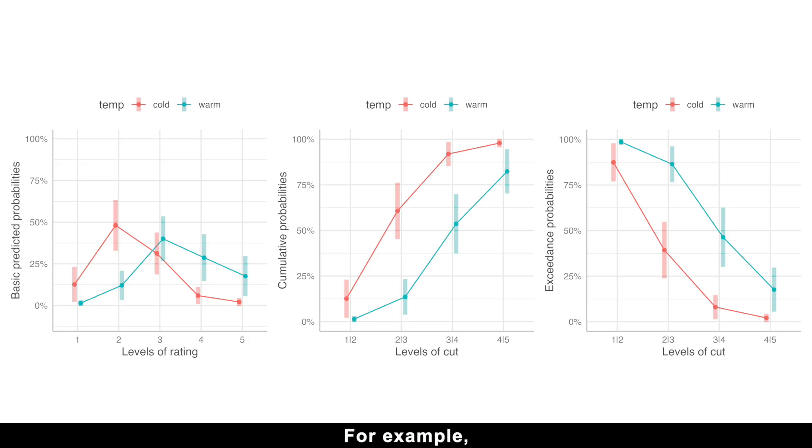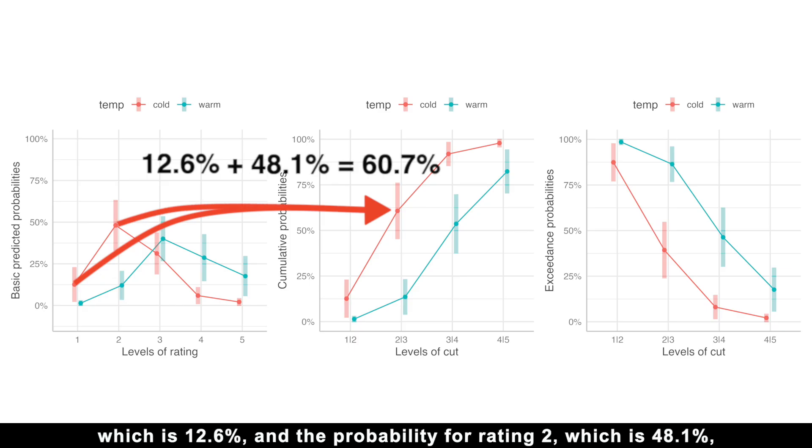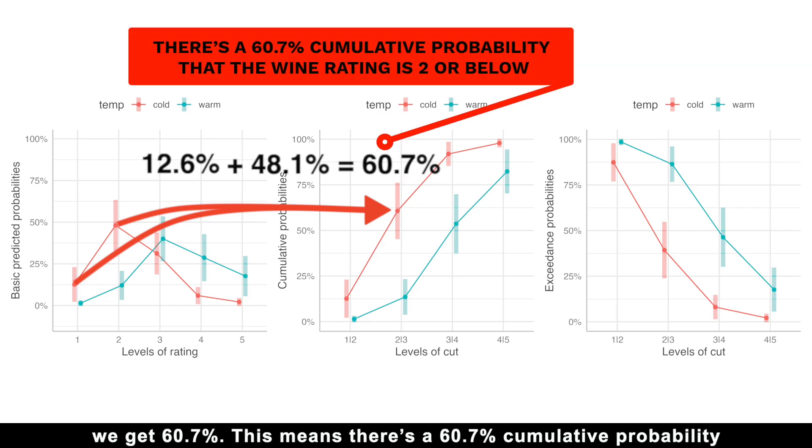For example, if we add up the probability of a cold wine having a rating 1, which is 12.6%, and the probability for rating 2, which is 48.1%, we get 60.7%.